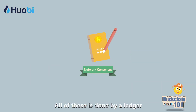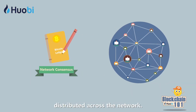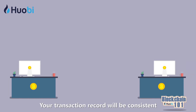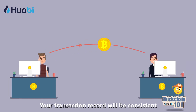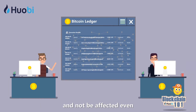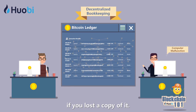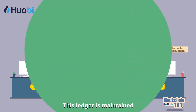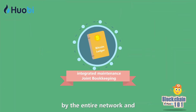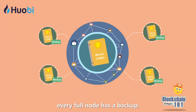All of this is done by a ledger distributed across the network. Your transaction record will be consistent and not be affected even if you lose a copy of it. This ledger is maintained by the entire network and every full node has a backup.